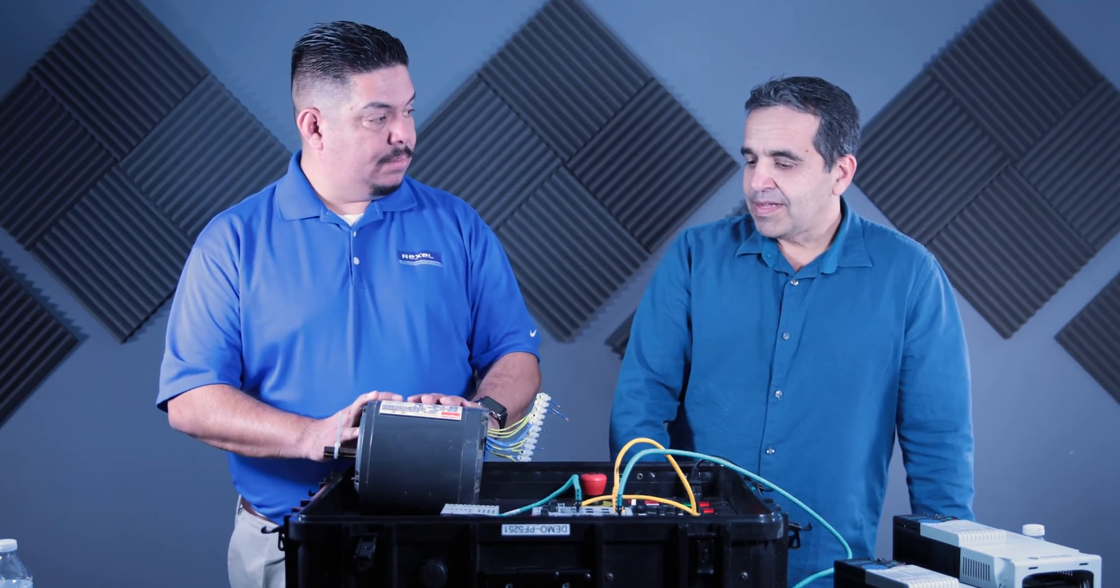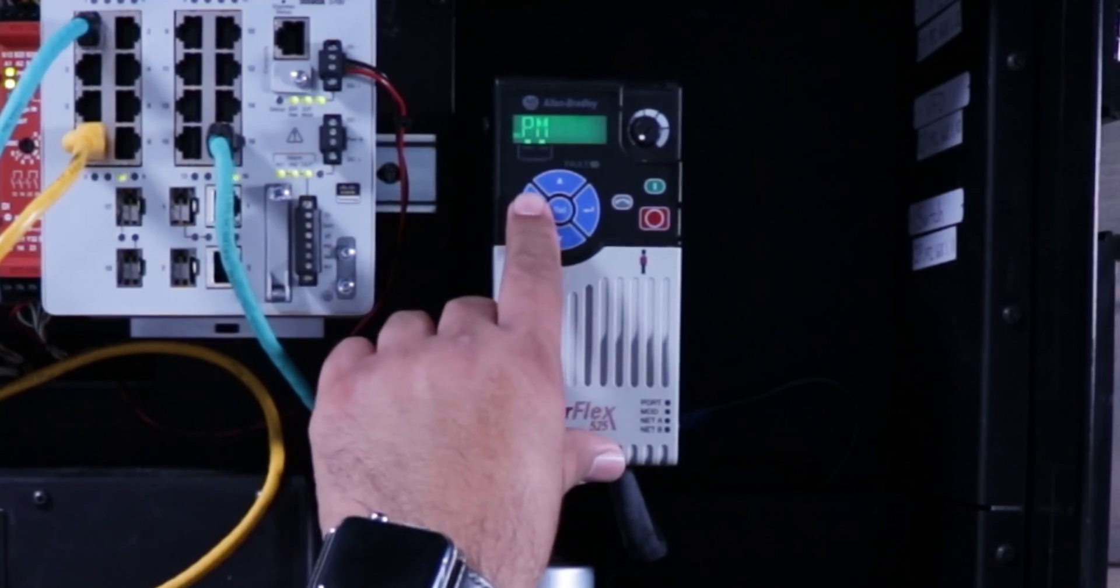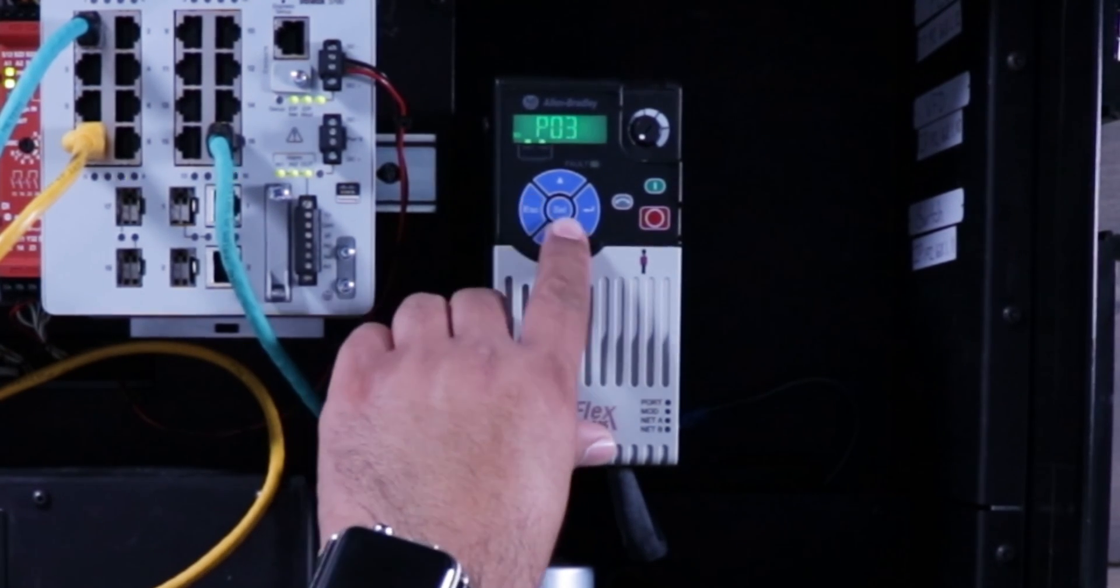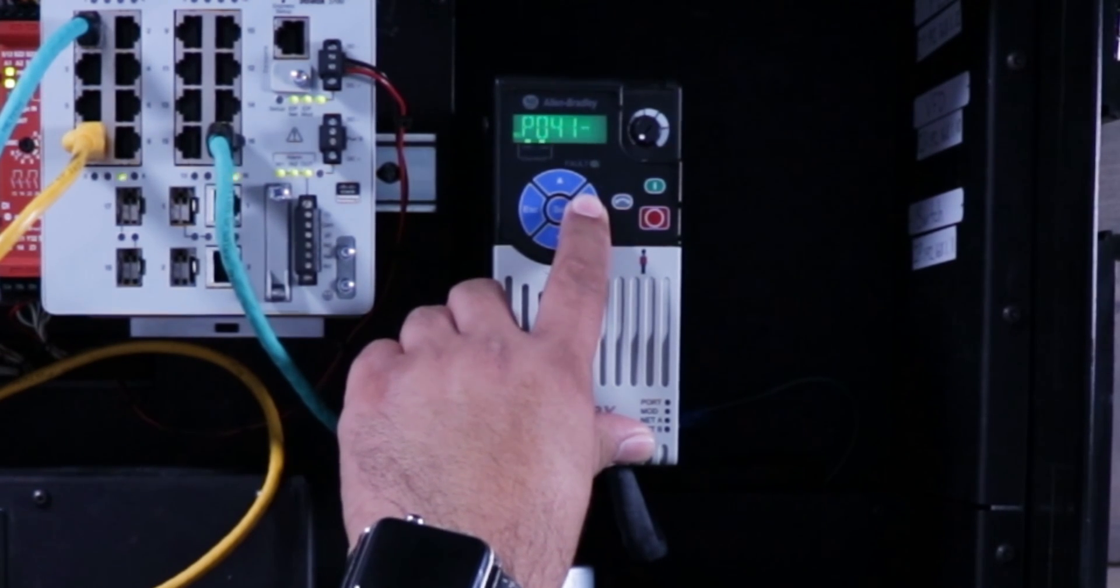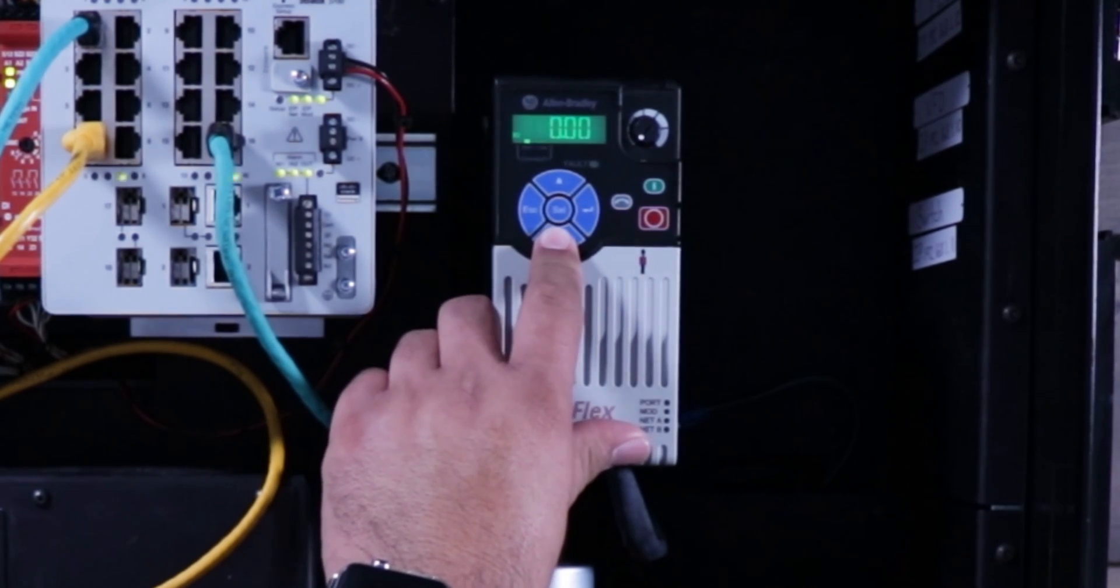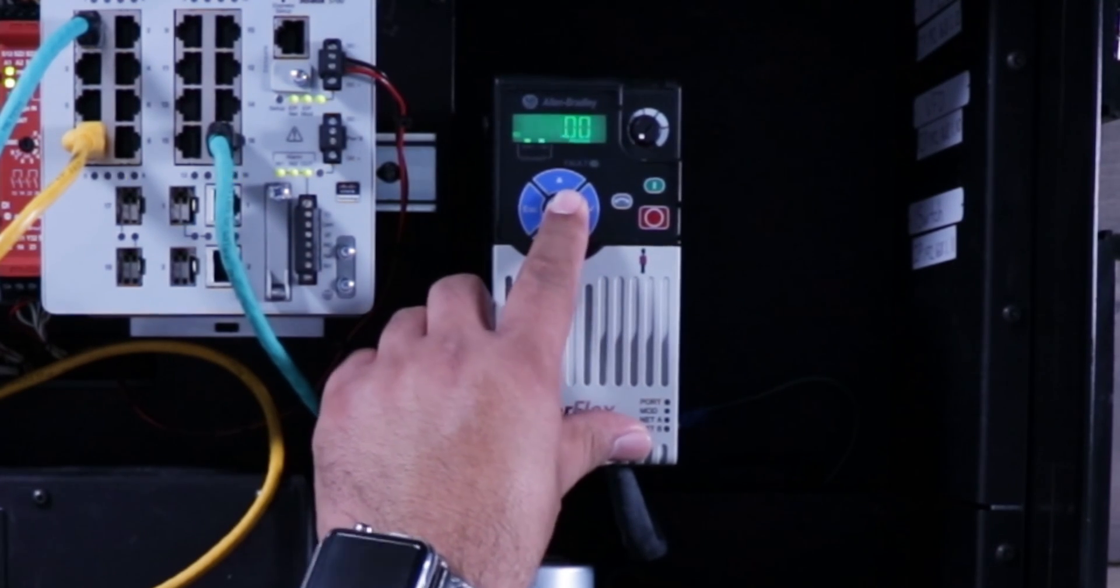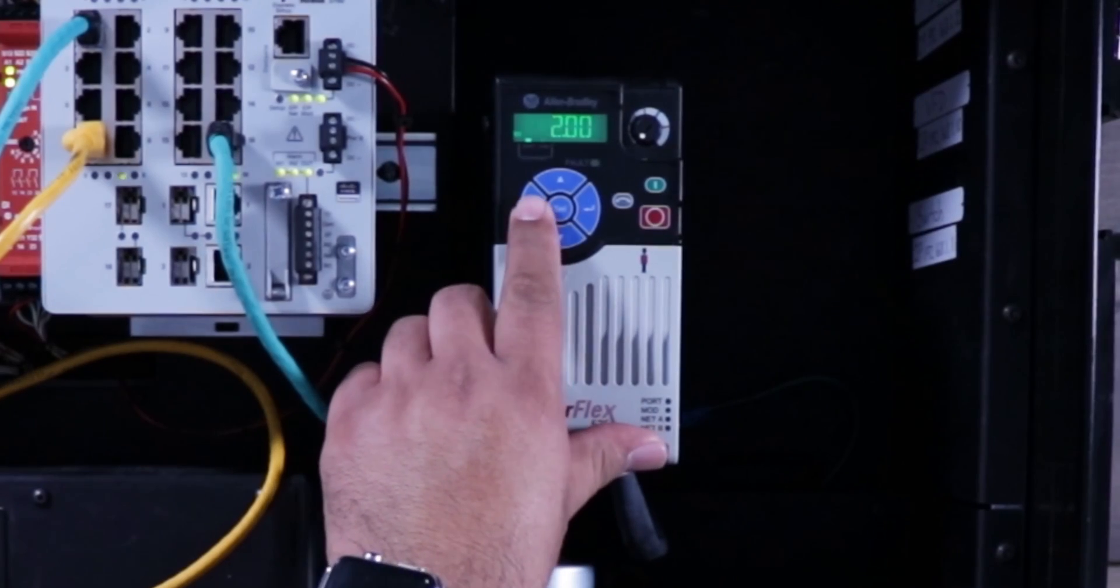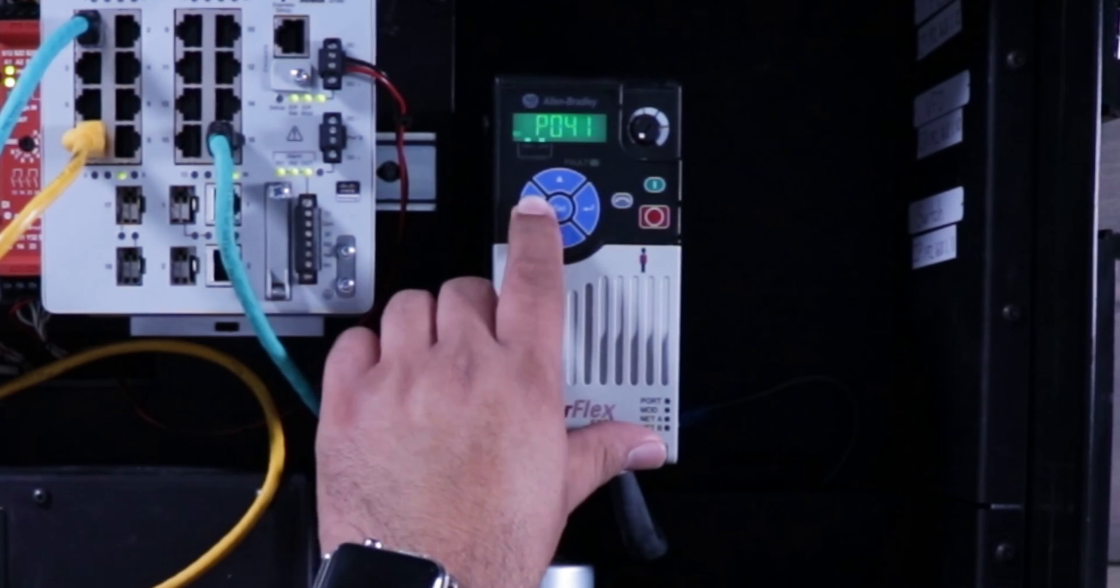Now we probably need to think about the accel time. So the start time, the accel time, which is P41, this is how long it's going to take the motor to get up to speed. So you can set it anywhere from 0 to 600 seconds. So we'll go ahead and set this one to 2 seconds. There we go. And the default was 10 before we started messing around with it. So we'll set the acceleration time to 2 seconds. And that's how fast it'll get up to frequency, that's how long it'll take.